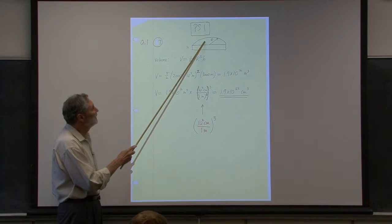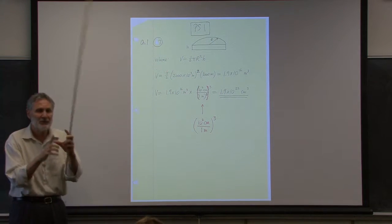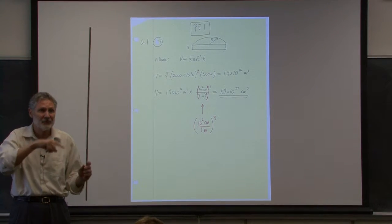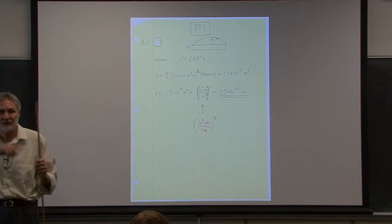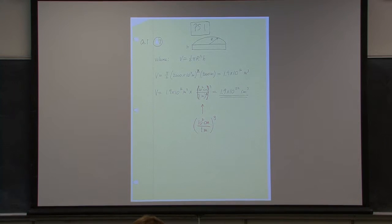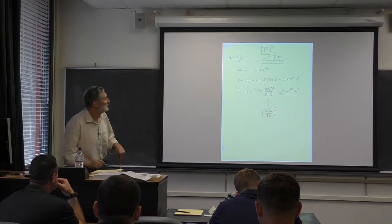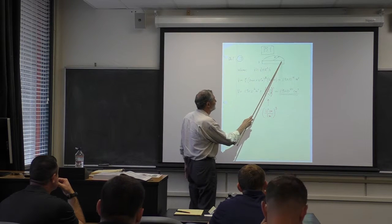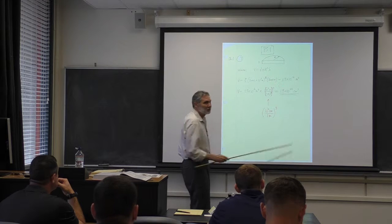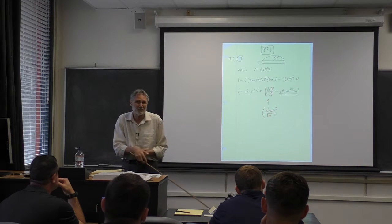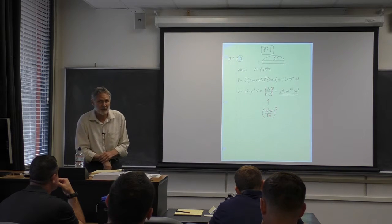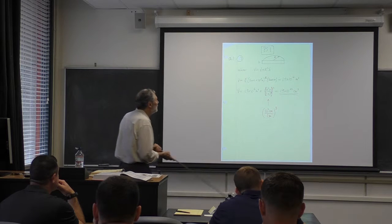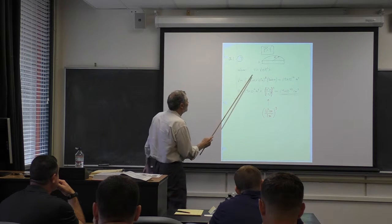The volume is the cross-sectional area times the thickness. The area of this semicircular disk is half the area of a full disk: one-half π r². Then to get the volume, we multiply by the thickness. If you have trouble with this, you can look it up online.